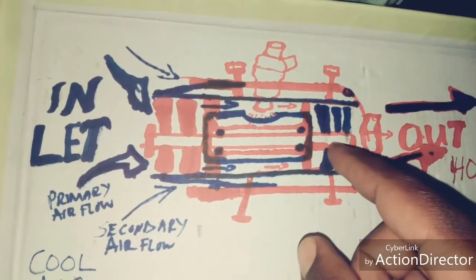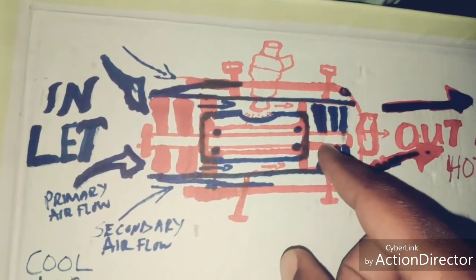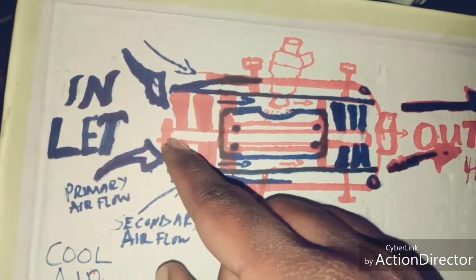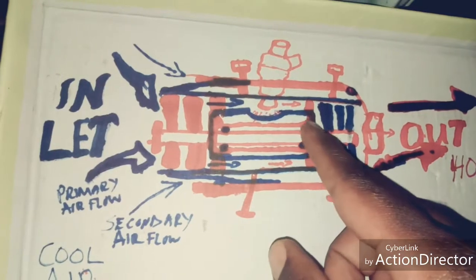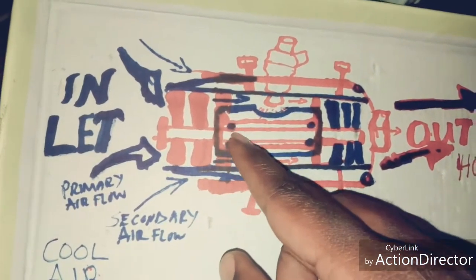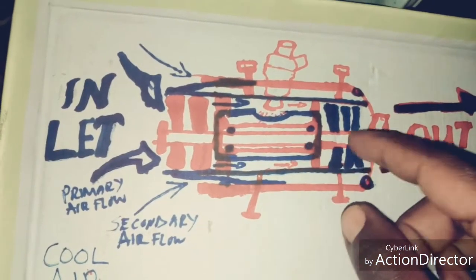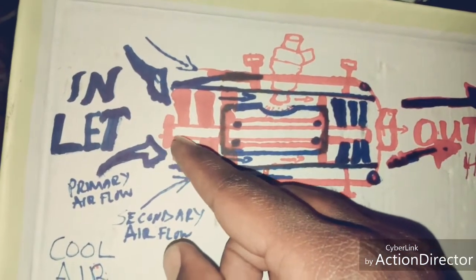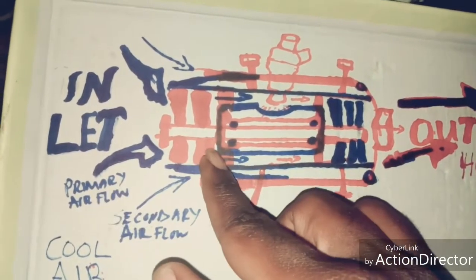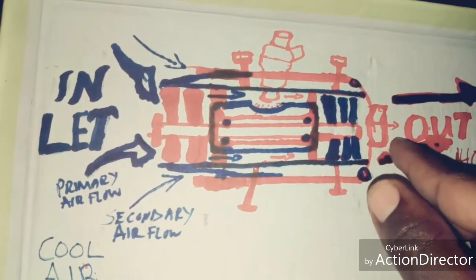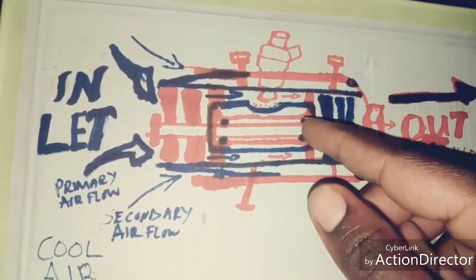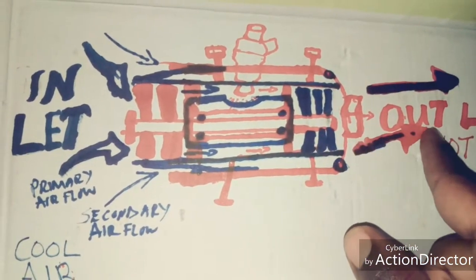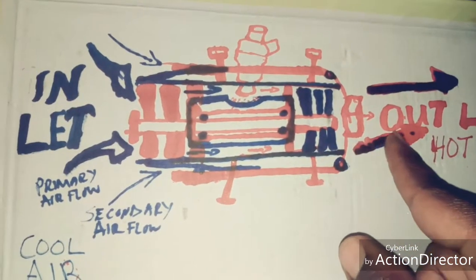When they combust, they will push these back turbines — as I showed you previously. These turbines are connected together with the front one through a shaft. Inside there is the hub and the bearing. So as they rotate, they also rotate the front turbine that sucks the air.